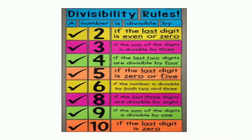A number is divisible by 2 if the last digit is even or 0. By 3, if the sum of the digits is divisible by 3. By 4, if the last two digits are divisible by 4. By 5, if the last digit is 0 or 5. By 6, if the number is divisible by both 2 and 3. By 8, if the last three digits are divisible by 8. By 9, if the sum of the digits is divisible by 9. By 10, if the last digit is 0.